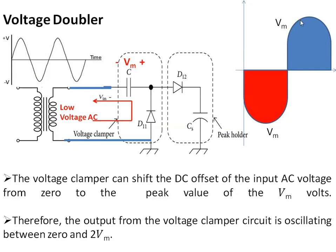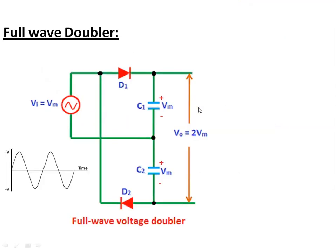Here you can see that because of voltage Vm present during the positive peak, the voltage at this output is oscillating between 0 and 2Vm. Because of this 2Vm, capacitor Cs is charged through diode D2 to a value of 2Vm, and the load needs to be connected across capacitor Cs.